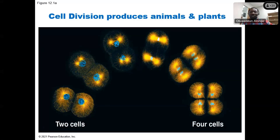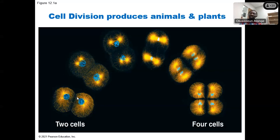So what is mitosis? Mitosis is simply what happens when there is a division that will make one cell become two, and two cells become four. Four cells become eight, eight becomes sixteen.